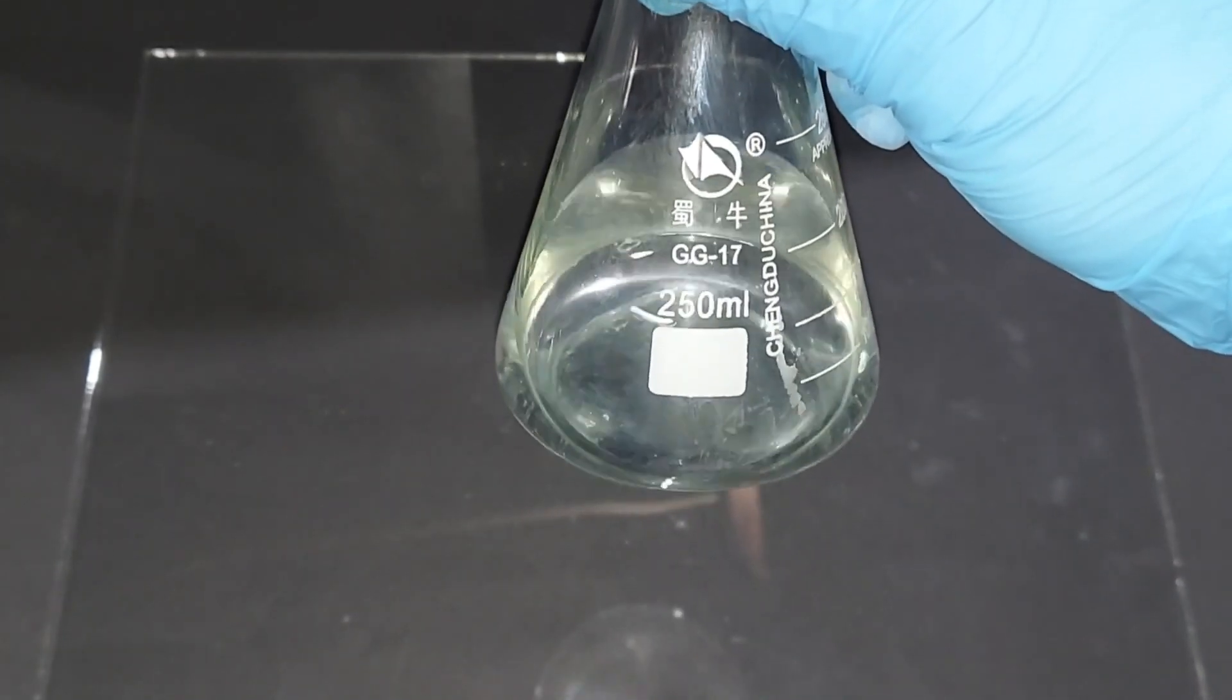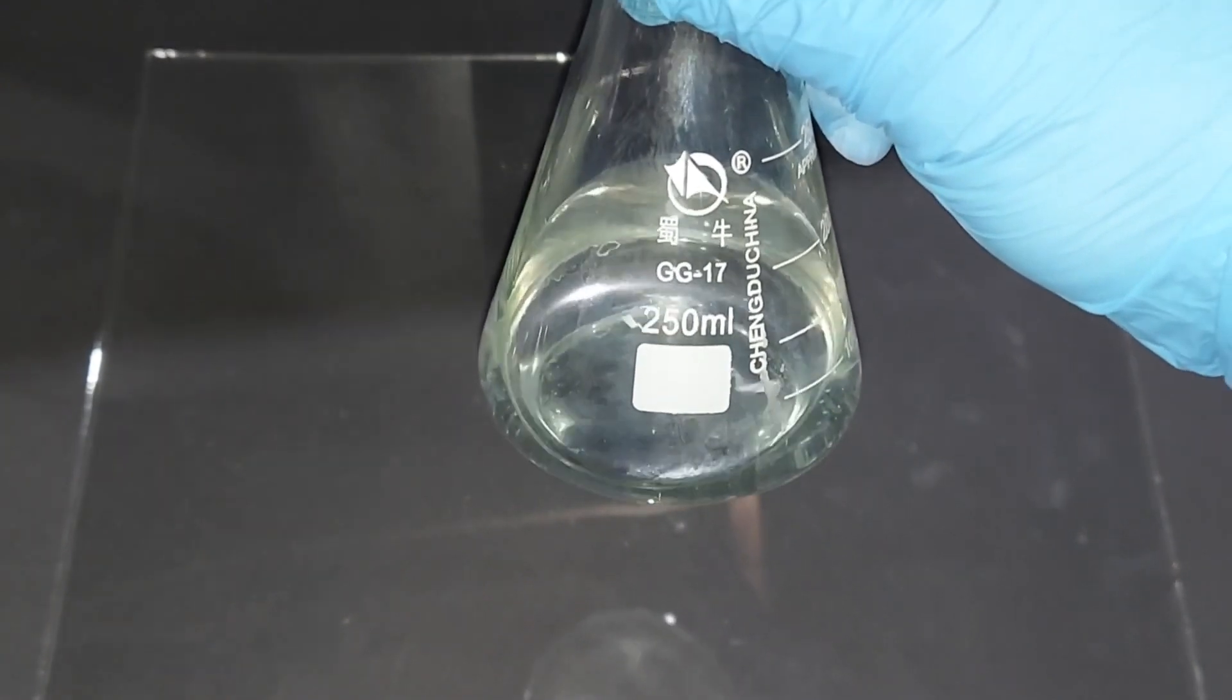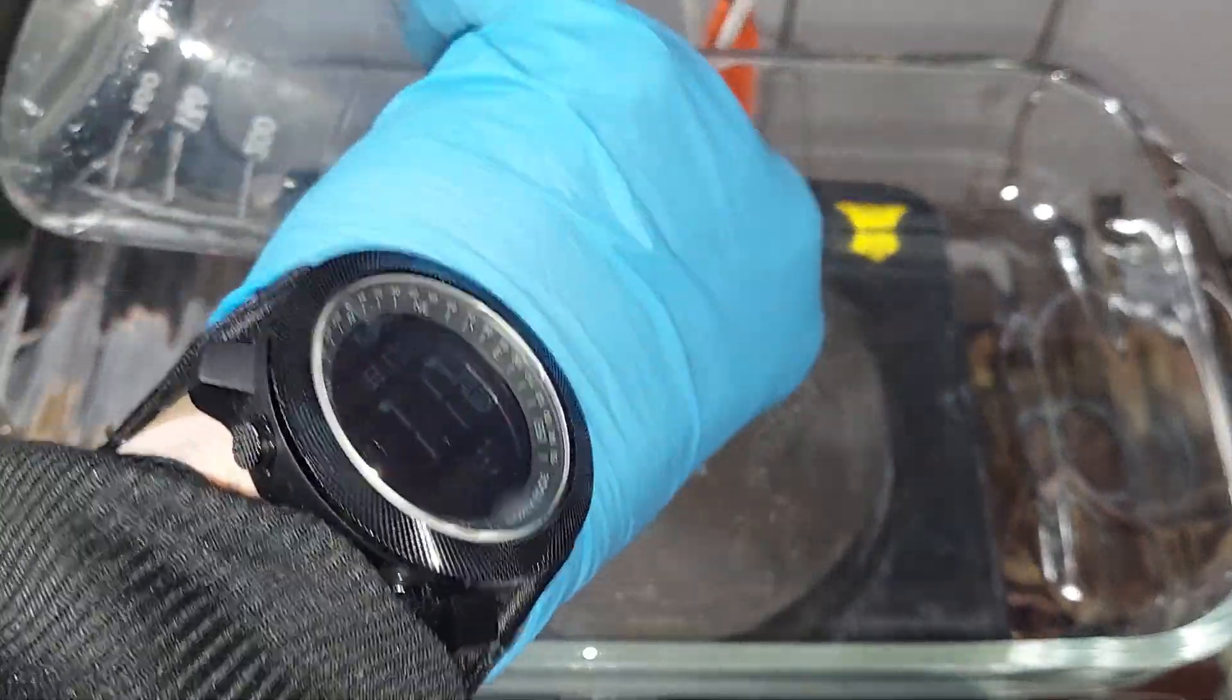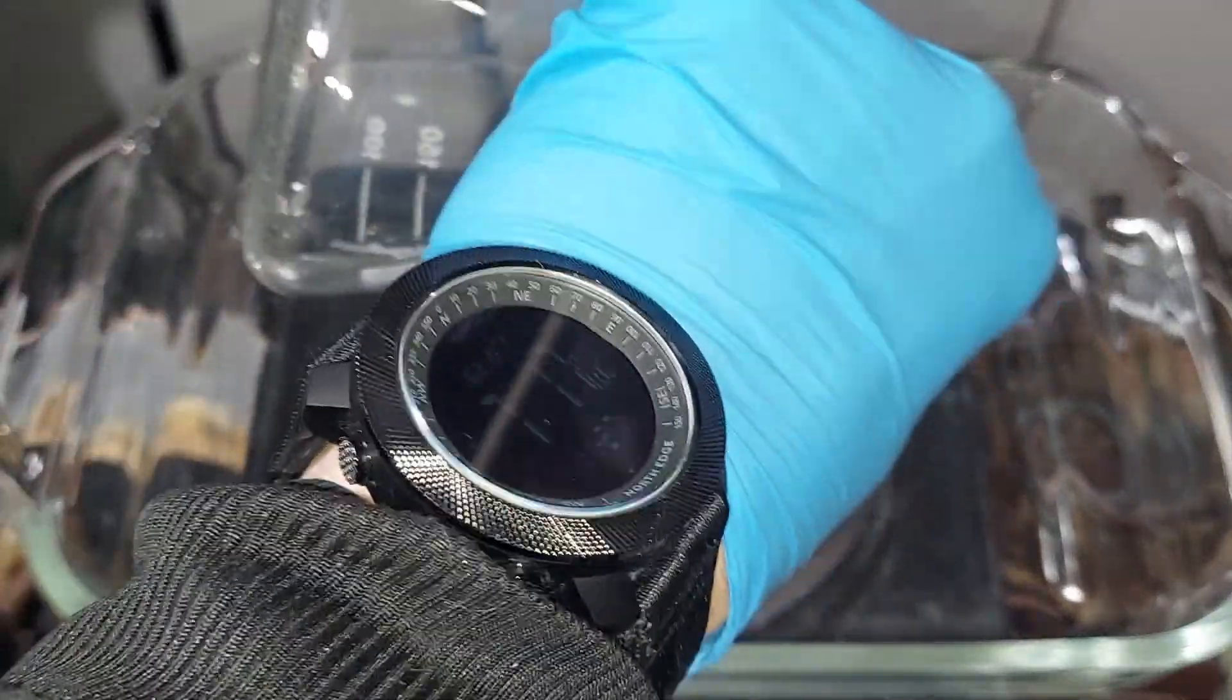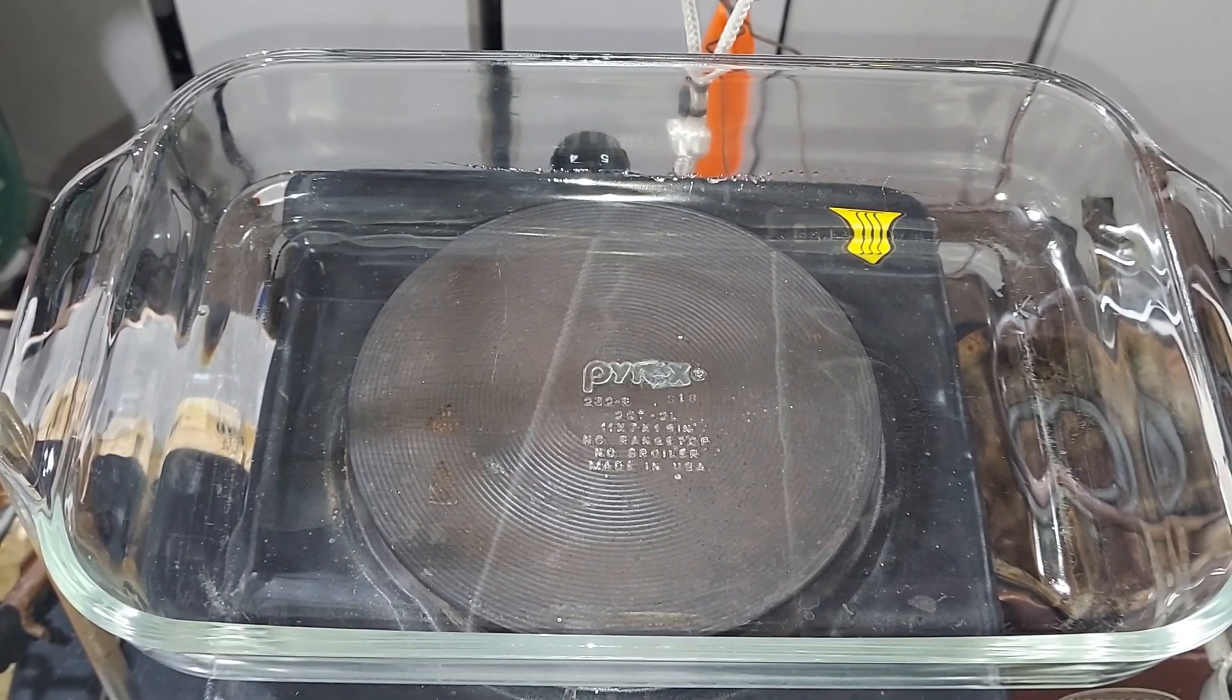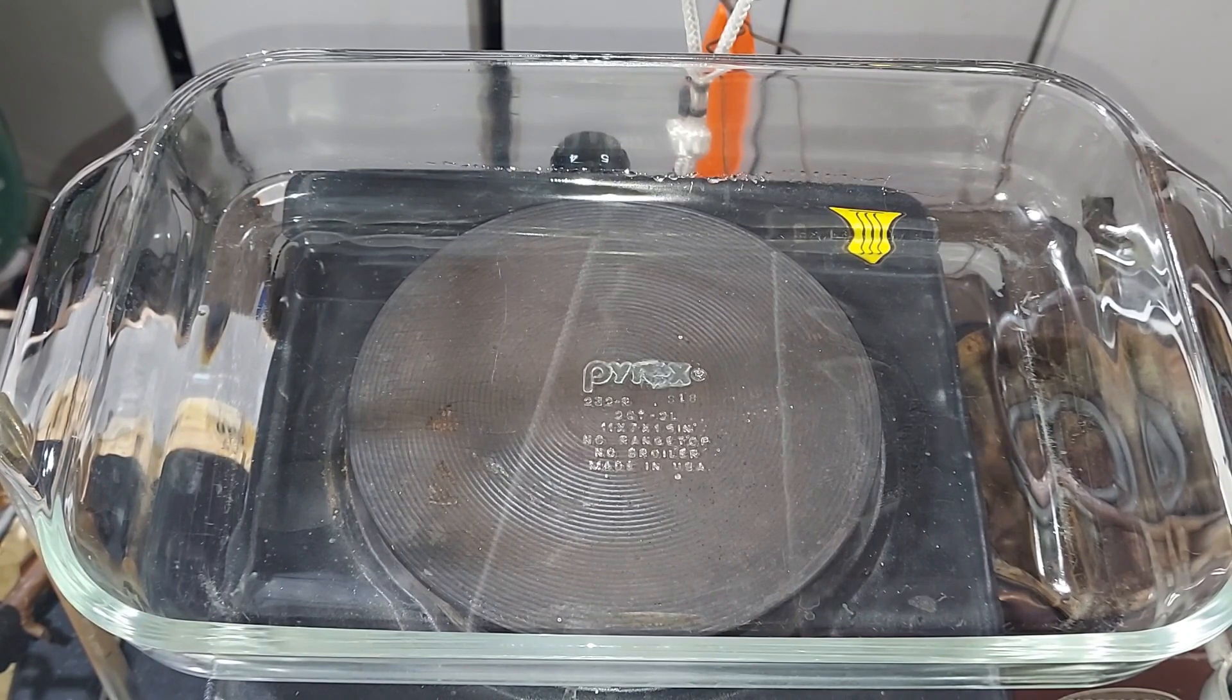So we need to heat this, evaporate the alcohol, and recover the crystals left behind. I'm going to pour the solution into this Pyrex pan, which will make it easy for me later to scrape out the crystals. The heat is turned almost all the way up. The alcohol should evaporate pretty quickly, and I'll come back when that's done.